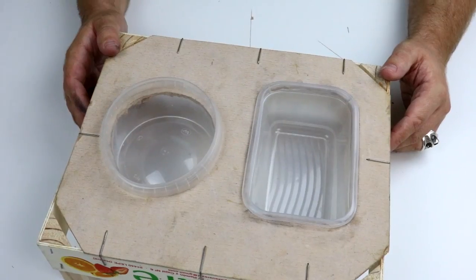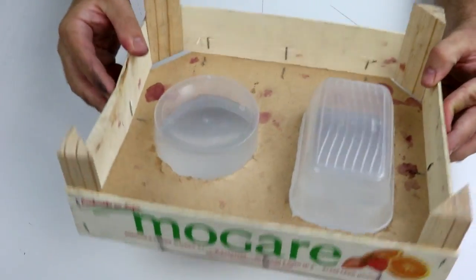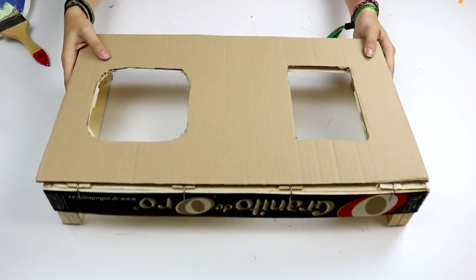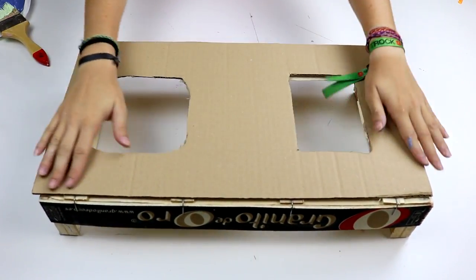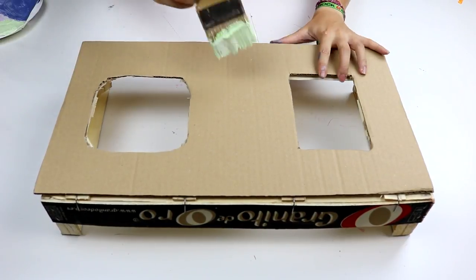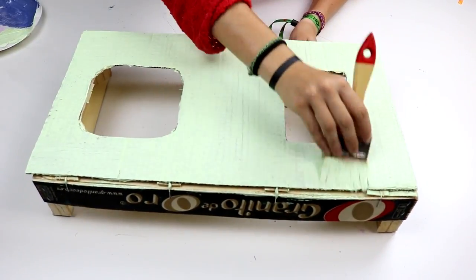Once we've cut the holes, place the Tupperwares and make sure they are in place. Now you can paint and decorate the feeder as you wish. We've made two models for our cats, one in green and the other in pink.